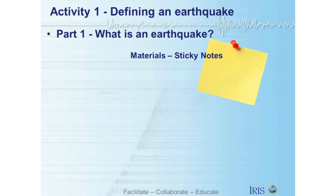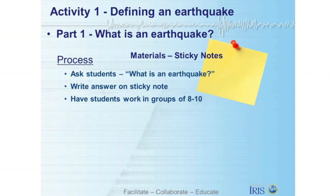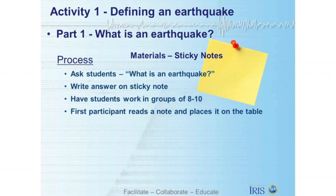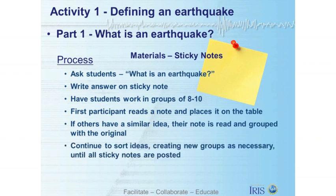So now we're going to talk about our first activity: defining an earthquake. This is something that you would do with your students in the classroom in an inquiry-based form. The only thing you're going to need are sticky notes — give one sticky note to each student. Ask them the question: what is an earthquake? Have them write their answer on the sticky note. Then group the students in groups of eight to ten and have them discuss what they've written. The first participant reads their note and places it on the table. If others have a similar idea, their note is read and grouped with that original, forming an affinity diagram. An affinity diagram helps to organize large numbers of ideas into their natural relationships. The students will continue to sort their ideas, creating new groups as necessary, until all of the sticky notes are posted.